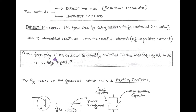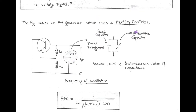So in the direct method for generation of FM, we use a voltage controlled oscillator. Here the control signal is the message signal, that is, the voltage signal. As shown in the figure, the Hartley oscillator is used for the generation of FM — that is the direct method.